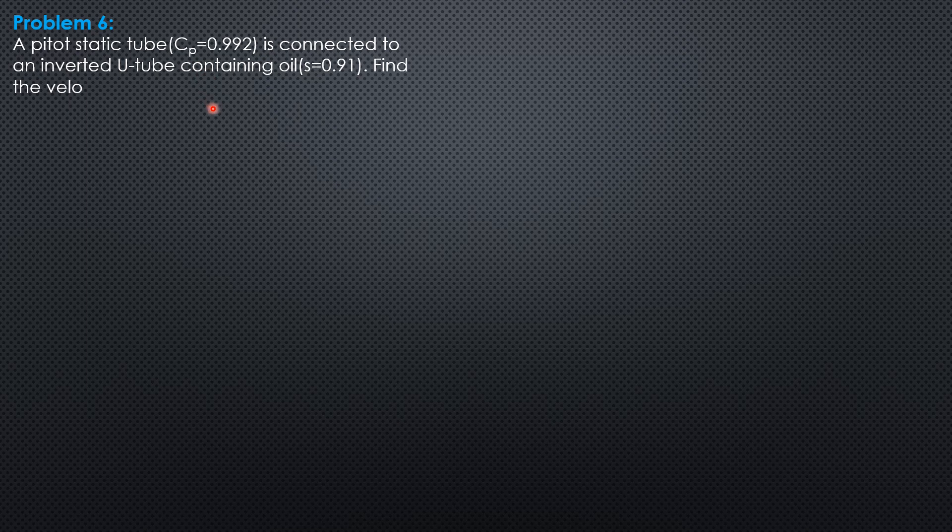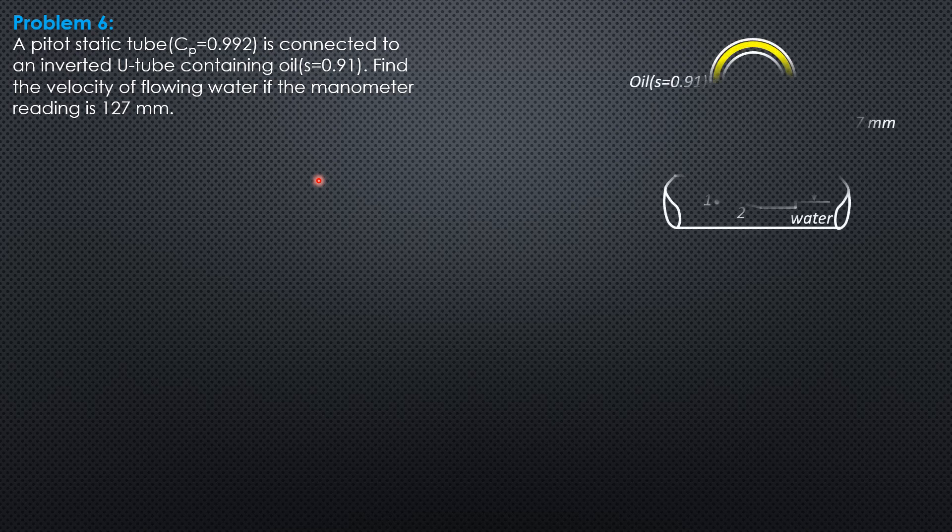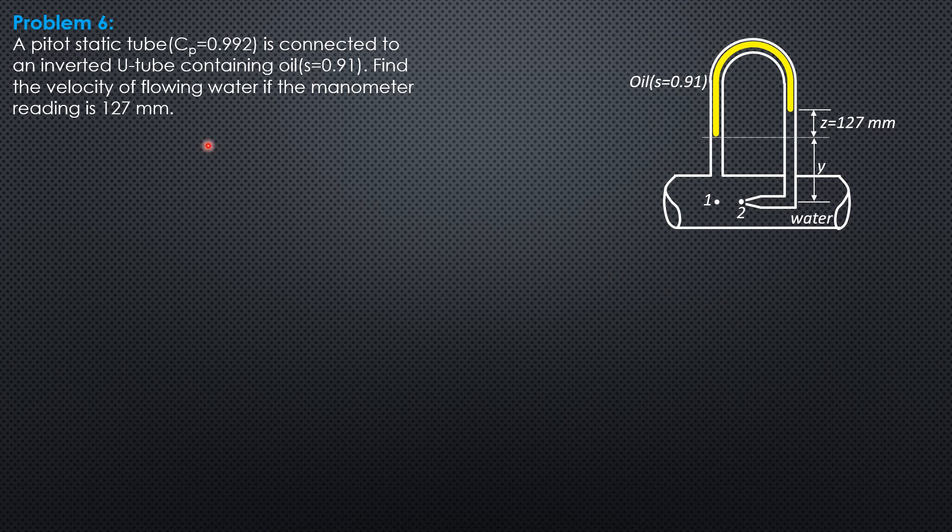Hi everyone, this is example 6 on flow meters. A pitot-static tube with coefficient 0.992 is connected to an inverted U-tube containing oil of specific gravity 0.91. Find the velocity of flowing water if the manometer reading is 127 mm. This is the figure that describes this problem.